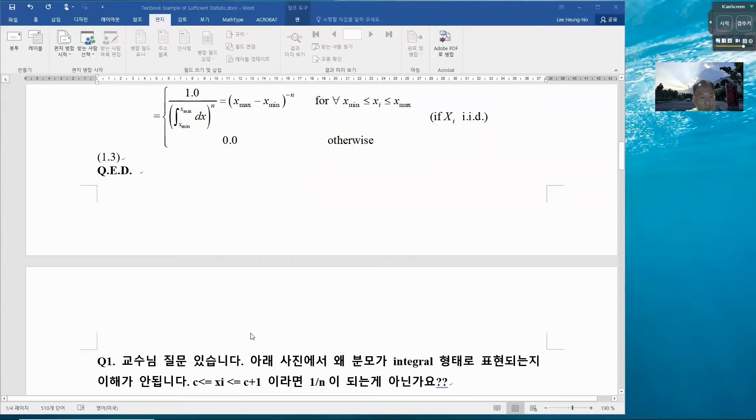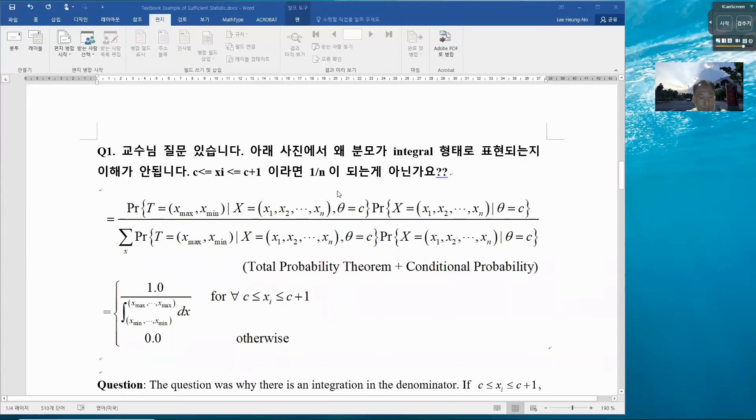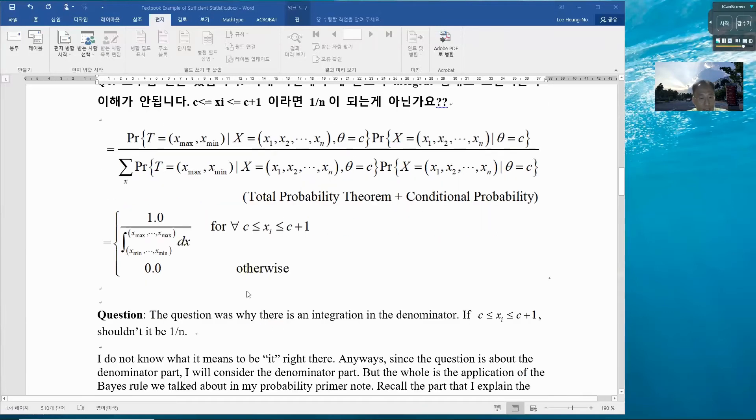But there were students' questions. A student asked why there is an integration in the denominator. He said he thinks that if xi is in this interval, shouldn't it be 1 over n? That was the question. When I saw this question, I thought I need to explain this one more time because I believe this is one of the difficult problems the students have.